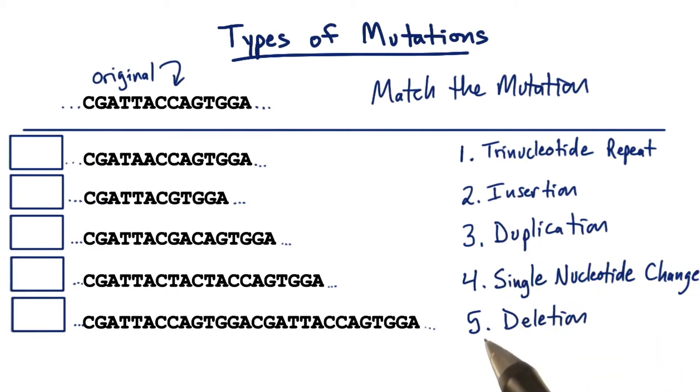I've numbered the types 1 through 5. When you think you've matched up the right mutation to the right sequence here, just go ahead and put that number in the box over here. See how you can do.